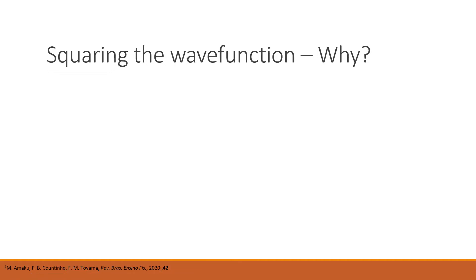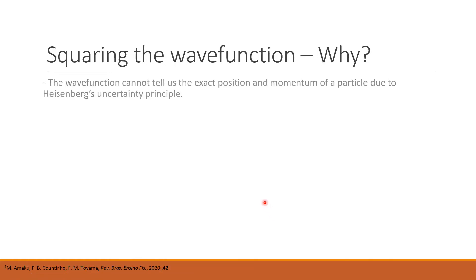The next thing we need to do is square the wave function — but why? The wave function will not tell us the exact position and momentum of the particle at the same time, because of Heisenberg's uncertainty principle.